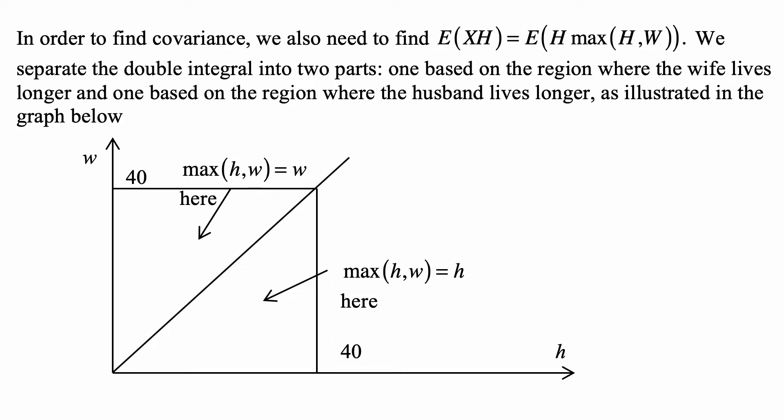So we have above the diagonal line, the area where maximum of H and W is W. W is represented by the vertical axis and H by horizontal axis. And then below the line is the region where maximum of H and W is H.